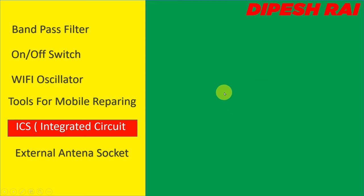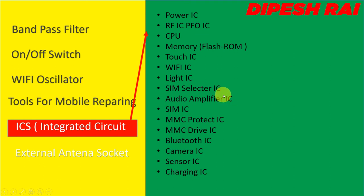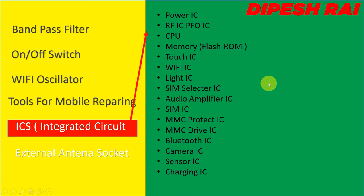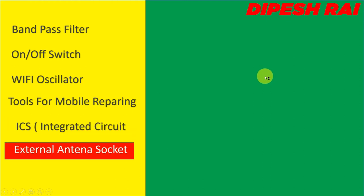Now we are discussing ICs, also known as integrated circuits. There are various types of IC: power IC, RF IC, PFO IC, CPU, memory flash ROM, touch IC, Wi-Fi IC, light IC, SIM selector IC, audio amplifier IC, SIM IC, MMC protect IC, MMC drive IC, Bluetooth IC, camera IC, sensor IC, and charging IC.